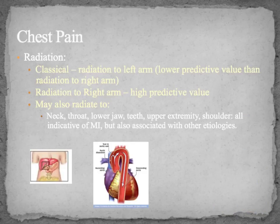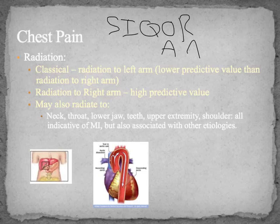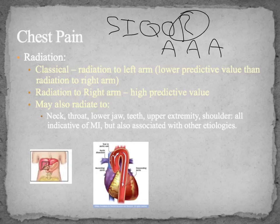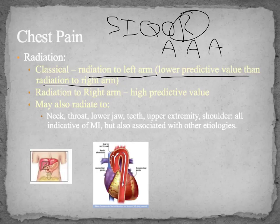You might notice I'm going through the acronym SICKORAAA, which is basically your history of present illness questions. Radiation is next. The classical presentation for myocardial infarction is radiation to the left arm. While it is an indicator of an MI, it has lower predictive value than radiation to the right arm. An infarction can have varied presentations — radiation to the neck, throat, lower jaw, teeth, upper extremity, and shoulder are all indicative of an MI.